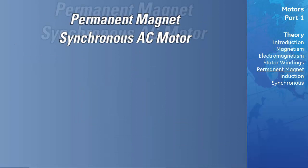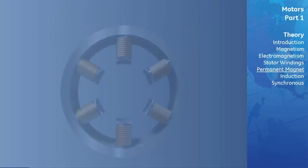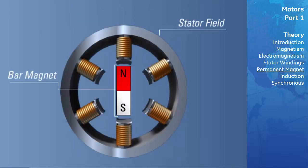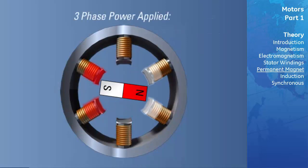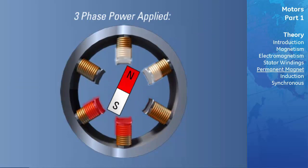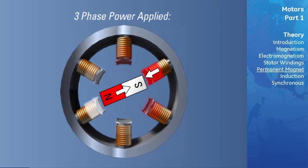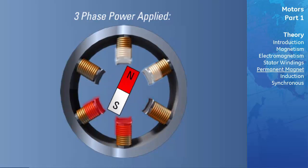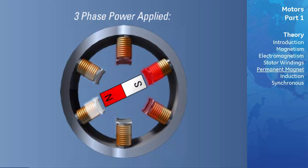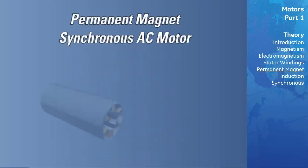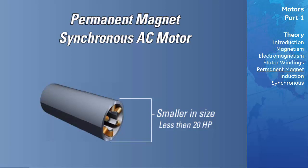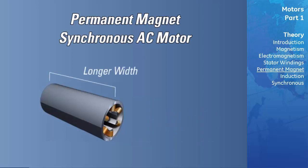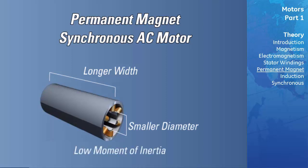Now let's take a look at the operation of a permanent magnet synchronous AC motor. First, we will mount a bar magnet in the center of the stator such that it can rotate freely about its own axis, as shown. Then we will apply three-phase power to the stator, and note that the stator's rotating magnetic field will form. Opposite poles of the bar magnet and stator field will attract each other, resulting in the production of torque, which will cause the bar magnet to rotate at the same speed as the stator field. Permanent magnet synchronous AC motors tend to be very small — from fractional horsepower to less than 20 horsepower — with a very low moment of inertia, making them ideal for high-speed positioning applications such as motion controllers.